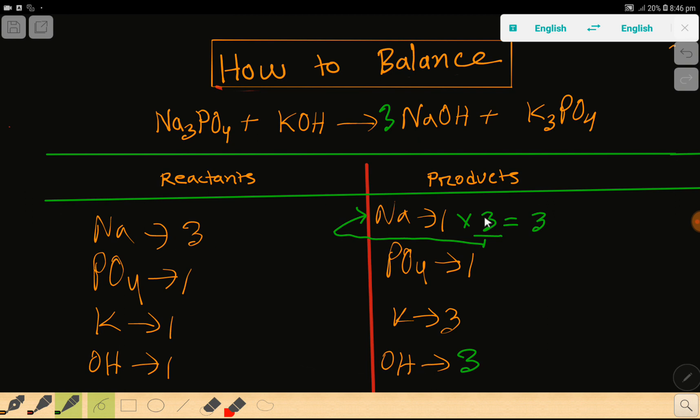So our sodium is 3, 3 is balanced. Our phosphate 1, 1. So here potassium is 1 but potassium is 3. So to balance the potassium what can you do? I can multiply here by 3.